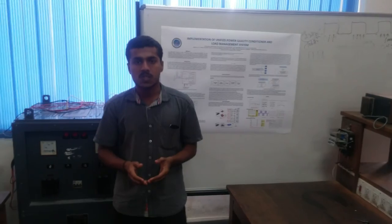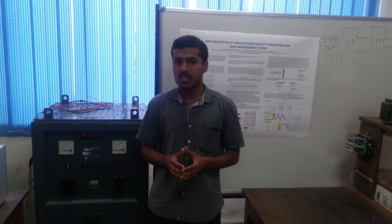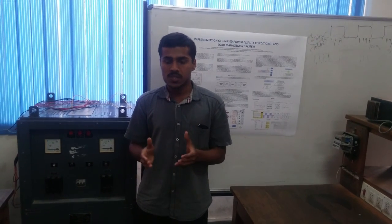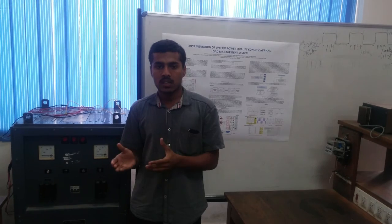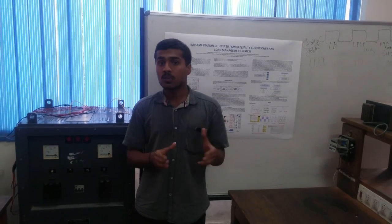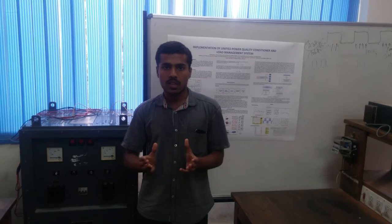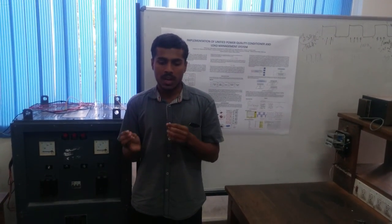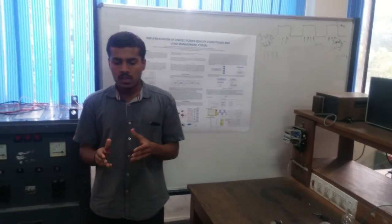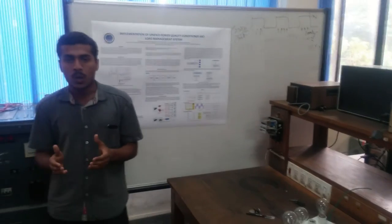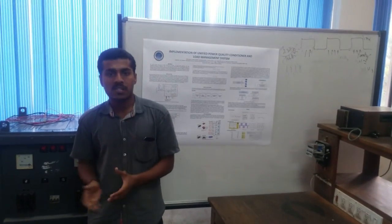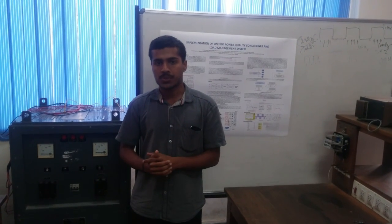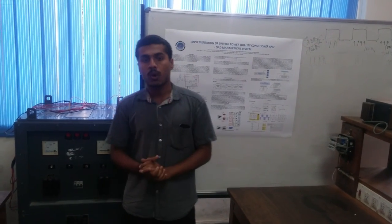Distributed generation system has emerged as a solution to solve the power insufficiency problem. When I say distributed generation, it is connecting renewable sources such as solar, fuel cells, wind, etc. at the customer end. So a community can decide to install solar, wind, etc. at their dispatch end. Though it has emerged successful in solving the power insufficiency problem, it has accompanied a few other peripheral issues — one being the issue of quality of power.